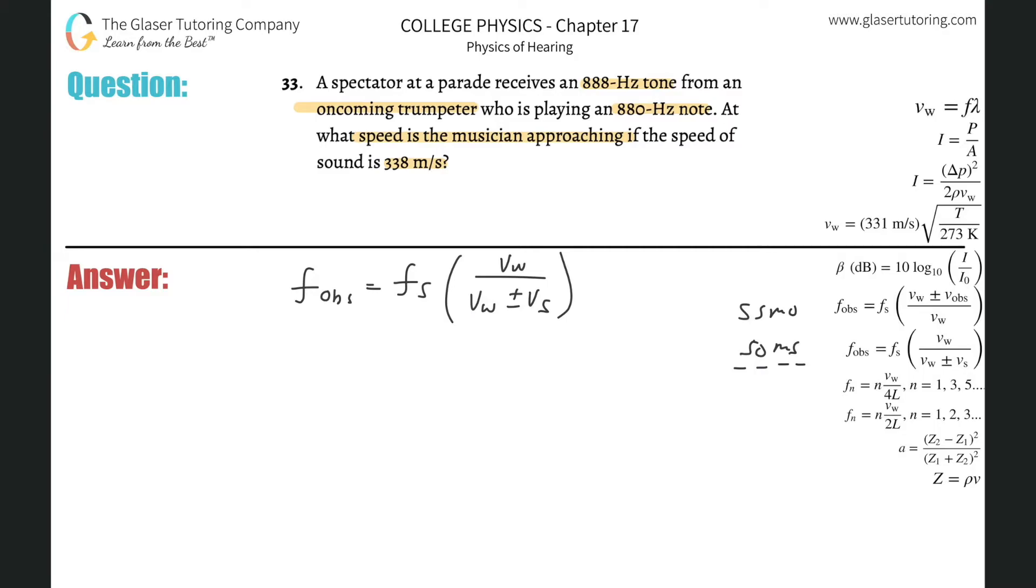If it's moving away, then it's going to be the positive one. This one, they told us it's an oncoming trumpeter, so we're going to be using the negative sign.